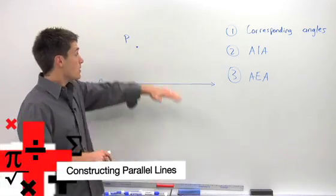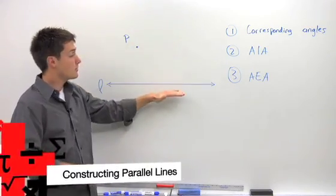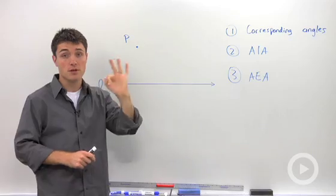When you're asked to construct a line through a point parallel to a given line, you're going to use three different methods.